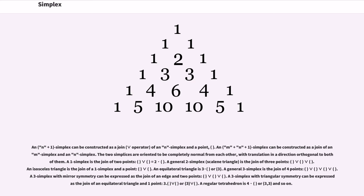An n+1 simplex can be constructed as a join of an n simplex and a point. An m+n+1 simplex can be constructed as a join of an m simplex and an n simplex. The two simplices are oriented to be completely normal from each other, with translation in a direction orthogonal to both of them. A 1-simplex is the join of two points. A general 2-simplex is the join of three points. An isosceles triangle is the join of a 1-simplex and a point. An equilateral triangle is 3 or {3}. A general 3-simplex is the join of four points. A 3-simplex with mirror symmetry can be expressed as the join of an edge and two points. A 3-simplex with triangular symmetry can be expressed as the join of an equilateral triangle and one point. A regular tetrahedron is 4 or {3,3}, and so on.